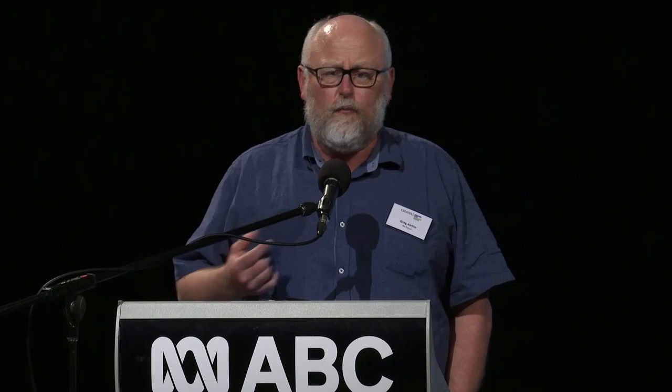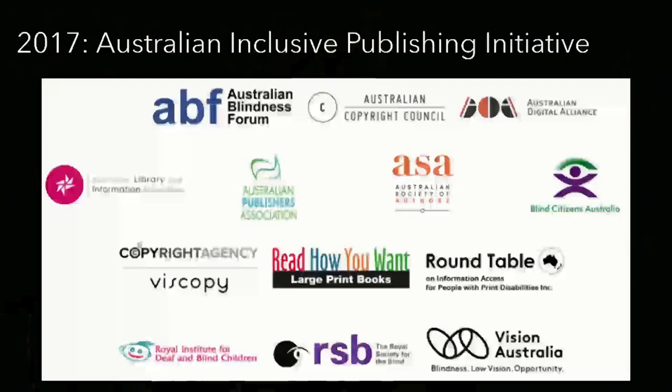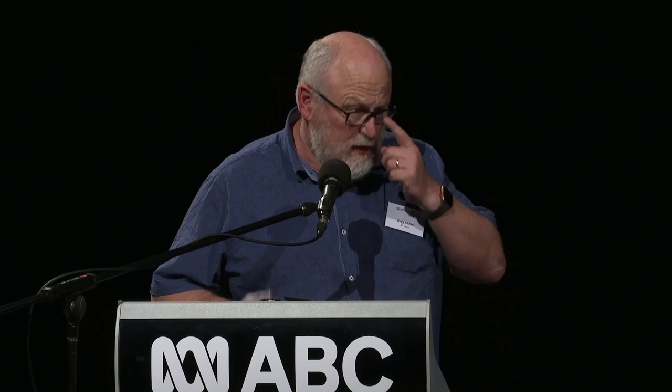Out of that came the Marrakesh Treaty Group here in Australia from the Australian publishers. Even America has joined the Marrakesh Treaty, which is quite amazing. But we have now rebranded as the Australian Inclusive Publishing Initiative. We've got groups like the Australian Blindness Forum, Round Table, Royal Society for the Blind, Vision Australia — but the publishers are there, the authors are there, the editors are there. Everybody is there together as a collective. And what we've decided as a group, in a public initiative last year, is that by 2021 every digital book produced here in Australia will be accessible by default.